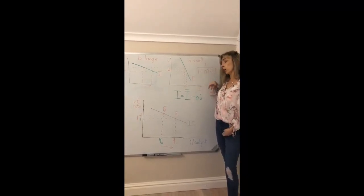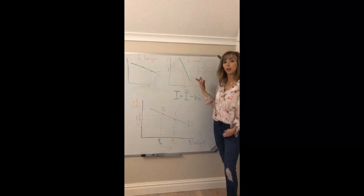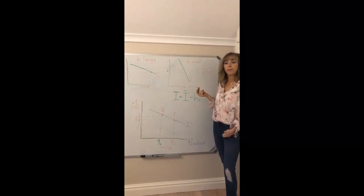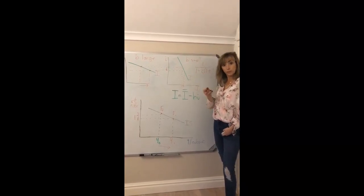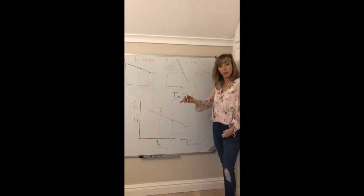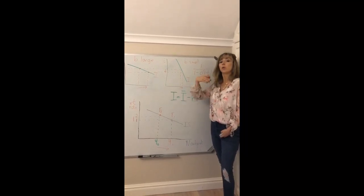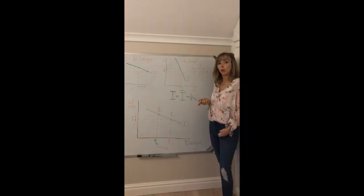So a greater multiplier means that for any given change in autonomous spending, the greater your little C is, and in turn the greater the multiplier, the greater will be the change in income that occurs.